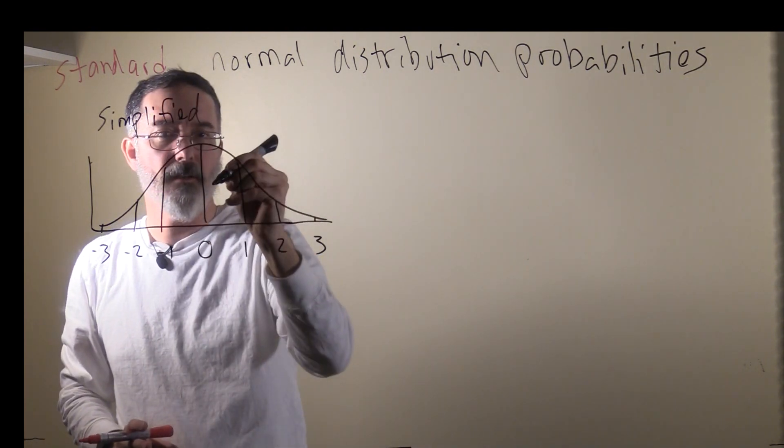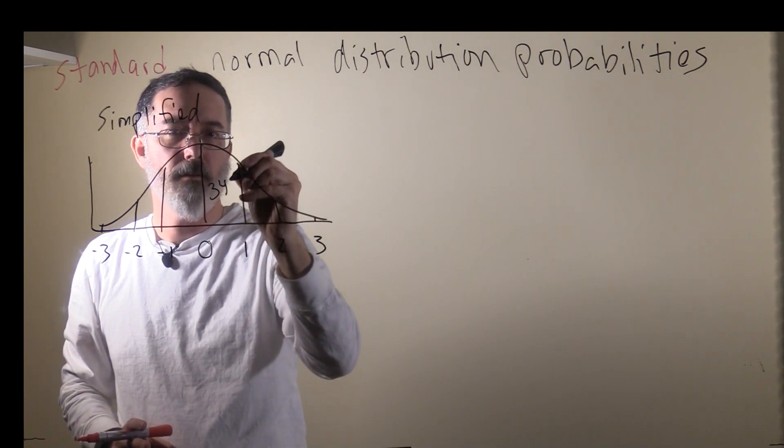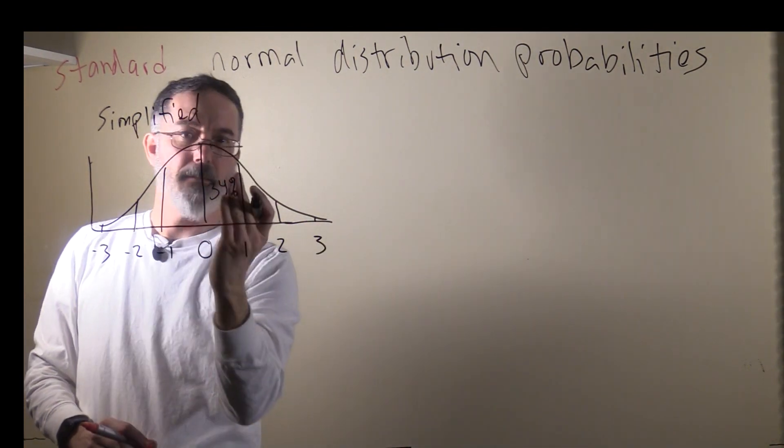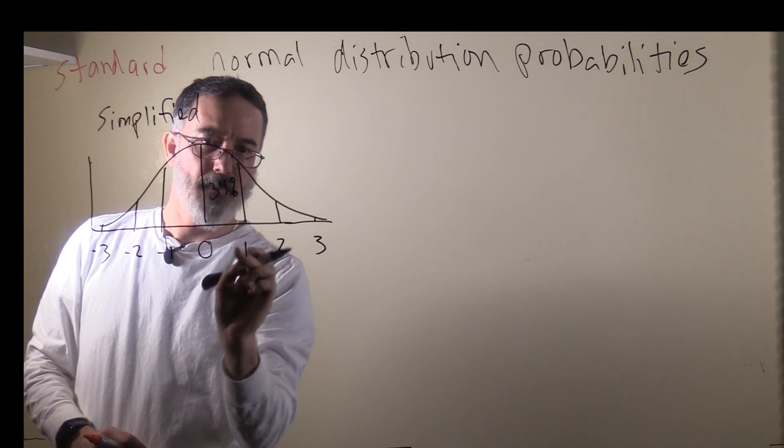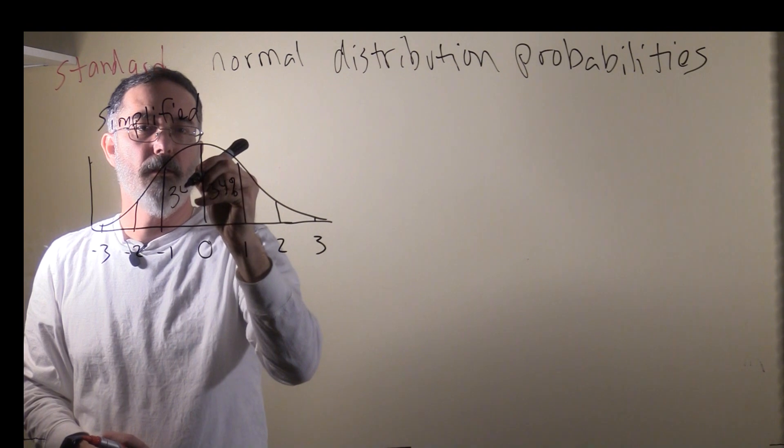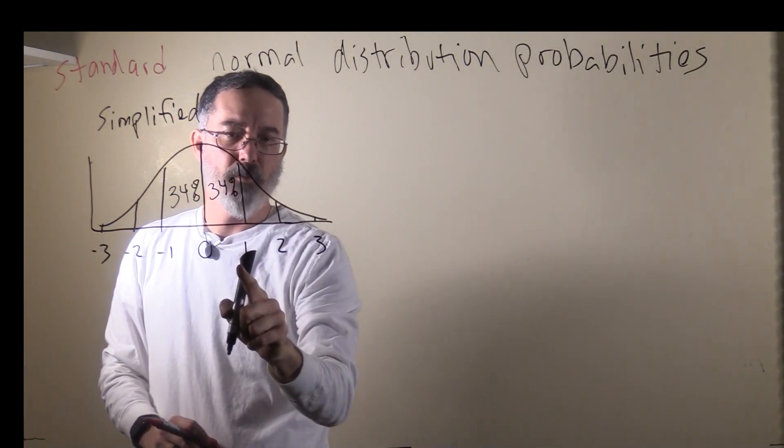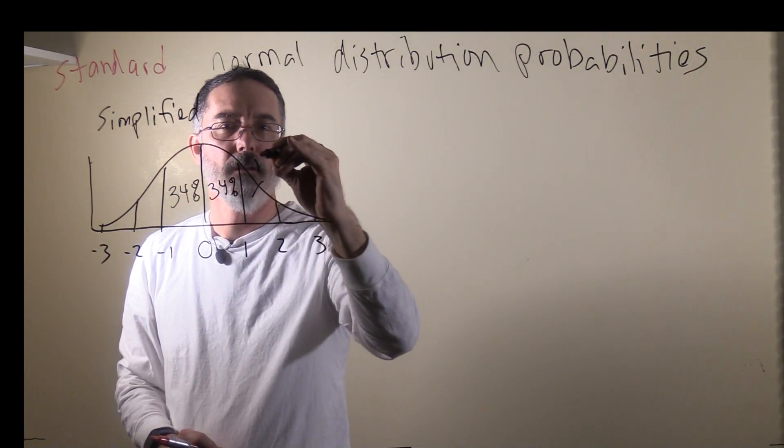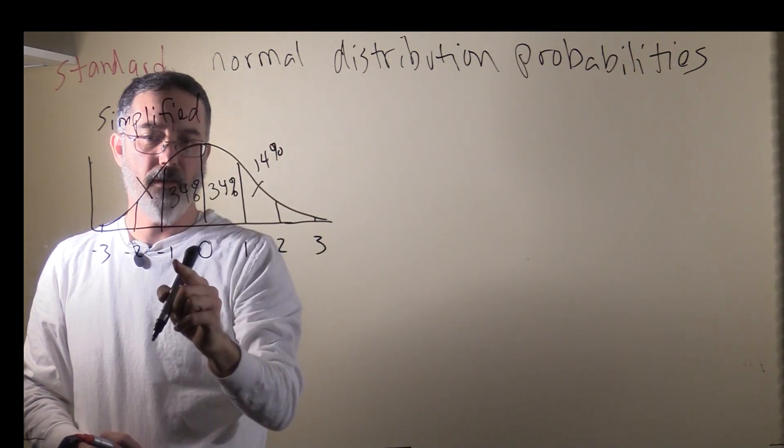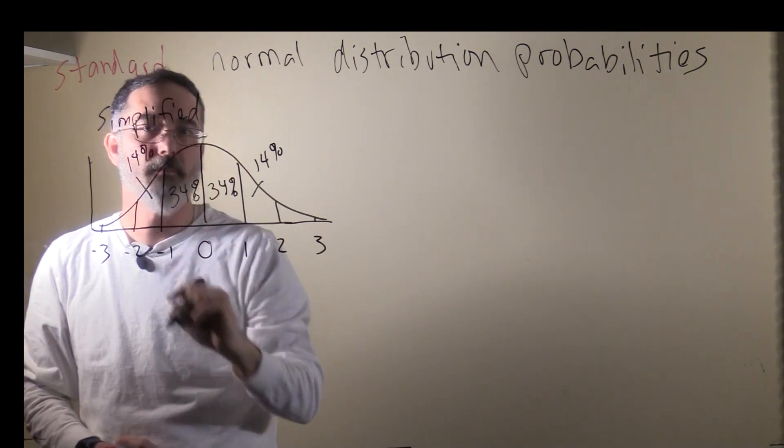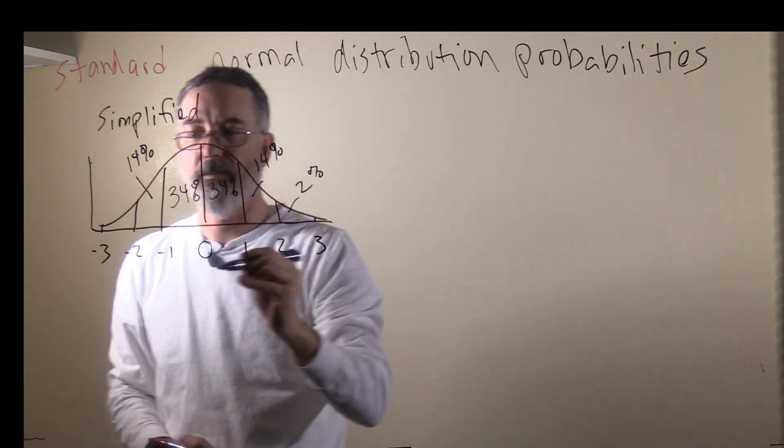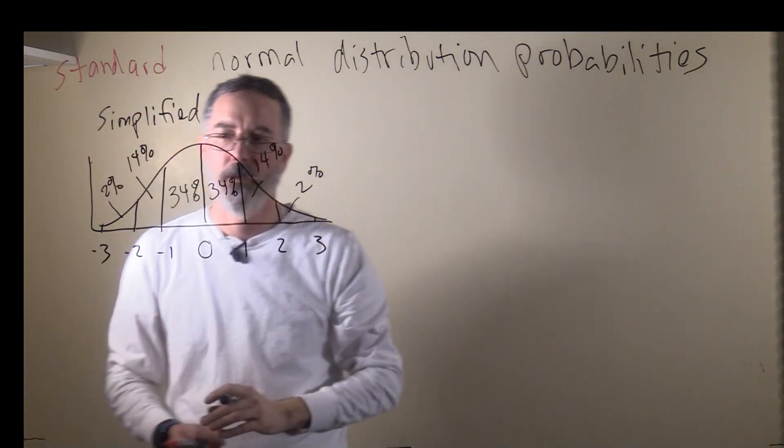It turns out that in between zero and one, it's about 34% of the overall area, about one-third. Because it's a symmetrical distribution, between zero and one is going to be the same as between zero and negative one. So there's 34% here as well. In between one and two is about 14% of the area. Between negative one and negative two, it's also about 14% of the area. In between two and three, it's approximately 2% of the area.